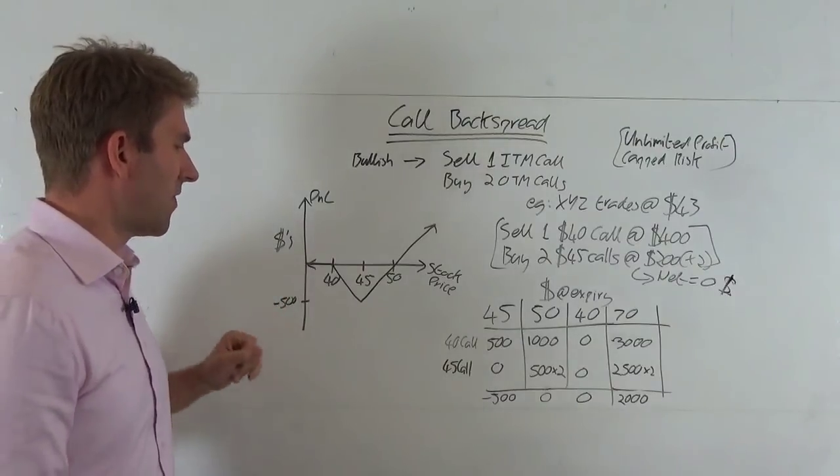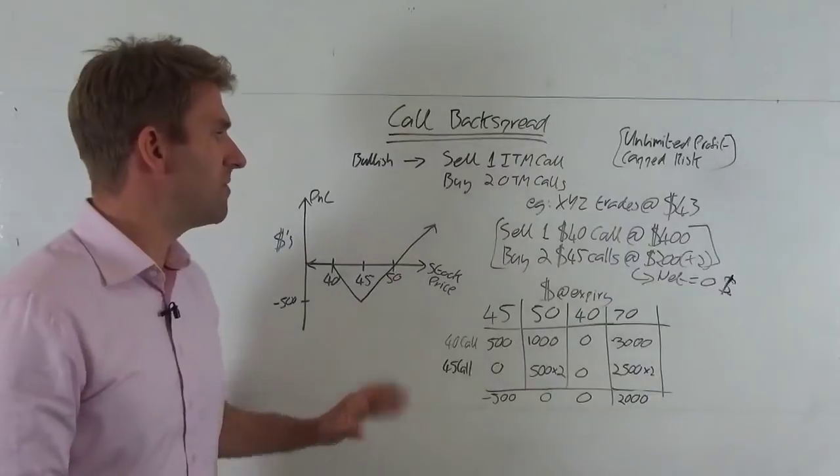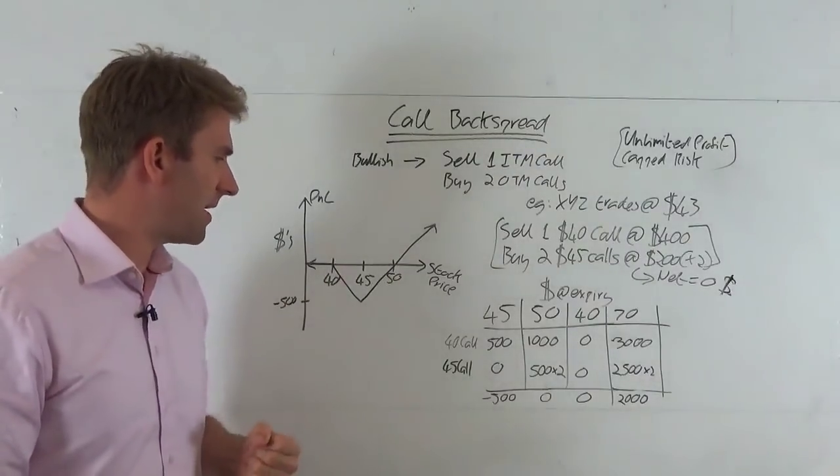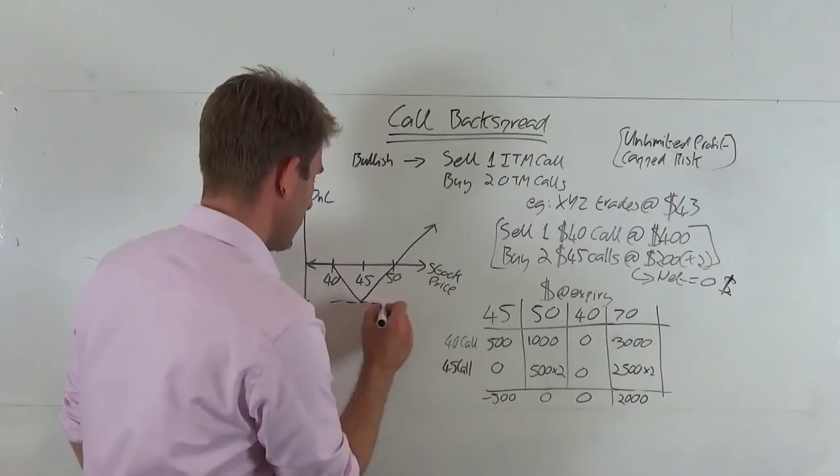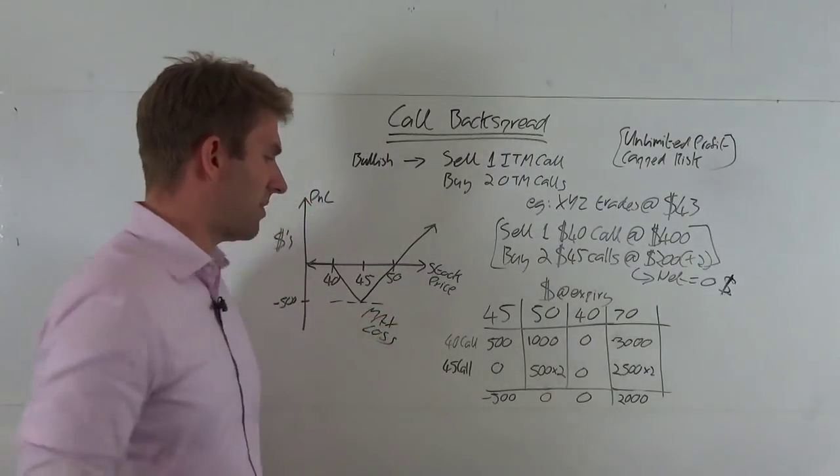Let's imagine now that the price just moves up a little bit. So it moves up to $45. What actually happens there? Well, this is actually our max loss point, $45.